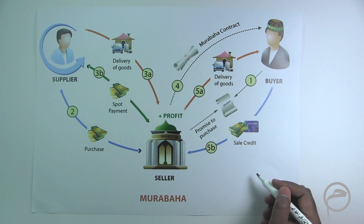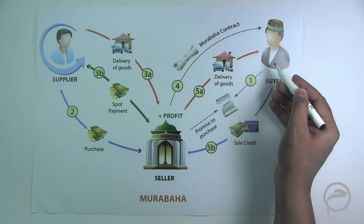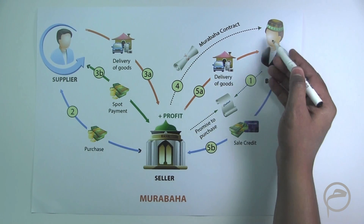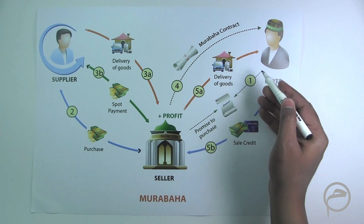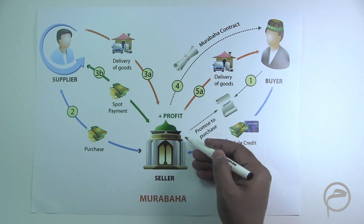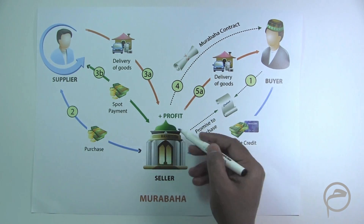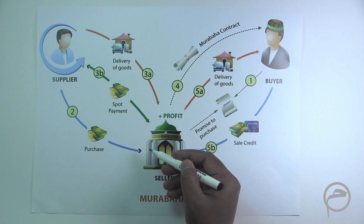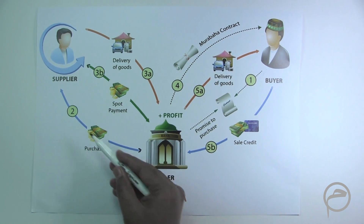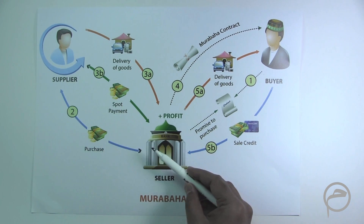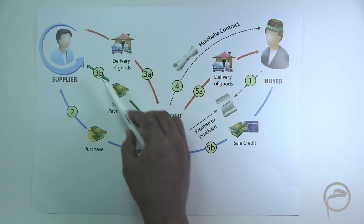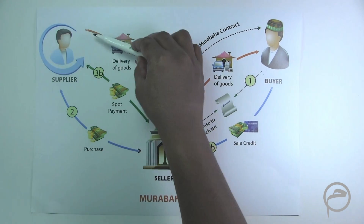The first is the Murabaha. Now in the Murabaha transaction, this is the customer or the client, this is the bank, and this is the supplier. So the customer approaches the bank and signs a promise to purchase, and requests the bank to make a purchase of certain identified assets which the customer has mentioned. The bank goes and purchases those identified assets from the supplier. The bank makes the payment, and the supplier supplies the goods.